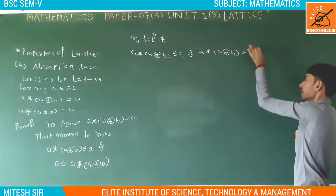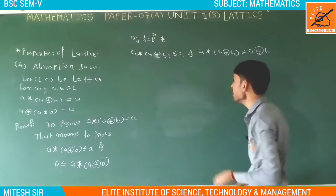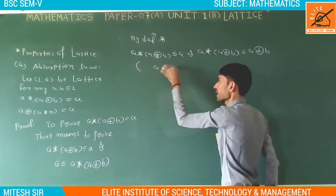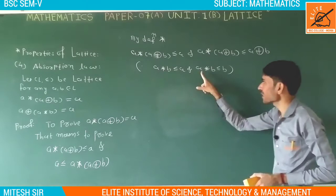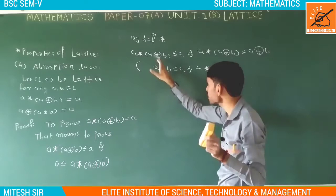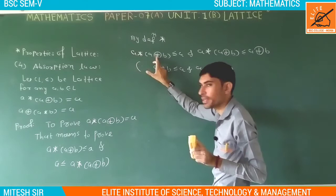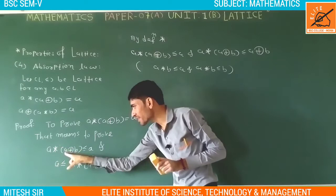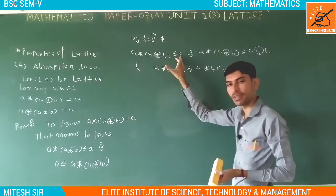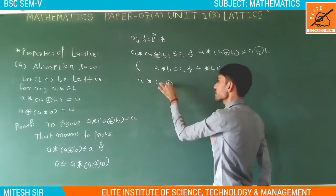By definition of star: A star (A ring sum B) is related to A, and A star (A ring sum B) is also related to A ring sum B. So we have A star (A ring sum B) related to A. This is result number one.